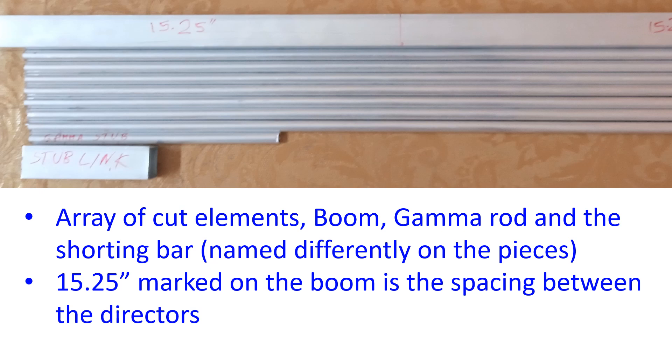The gap between the gamma match and the driven element is given as 1.5 inch. So I have cut 3.5 inch shorting bar of the 1 inch square pipe. Length of the 3/8 inch aluminium pipe has been mentioned as 7.25 inch.